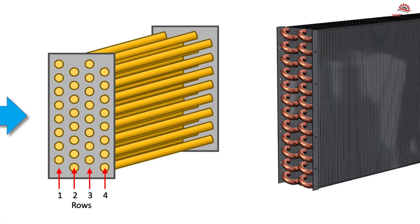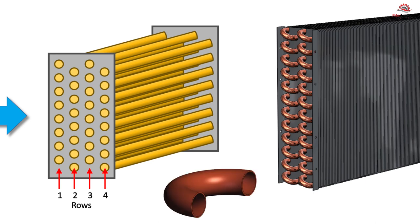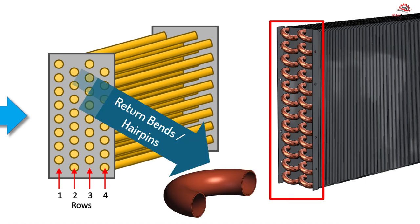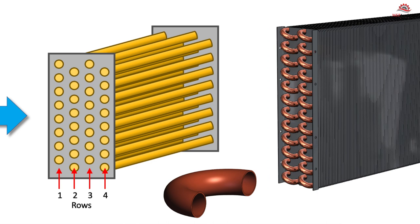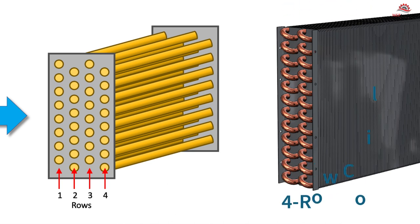To count the rows of coils, there are several methods. First, look at the end of the coil without the header and count the return bends or hairpins. The hairpins are 180-degree fittings that turn the flow back into the coil. Each hairpin accounts for two rows if aligned horizontally. So if you have two hairpin turns horizontally aligned, then you have a four-row coil.